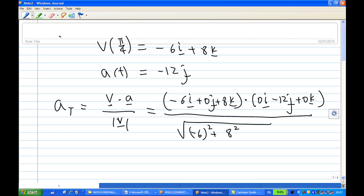The length of v is equal to square root of minus 6 squared plus 8 squared. When we do the dot product, minus 6 times 0 is 0, 0 times minus 12 is 0, and 8 times 0 is 0. So this is equal to 0 over square root of 100. 64 plus 36 is 100, which is 0. So At is equal to 0.